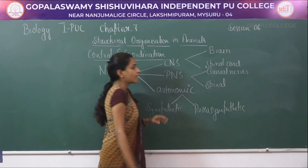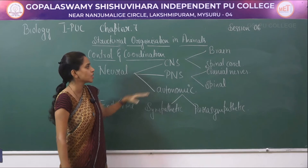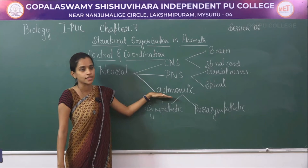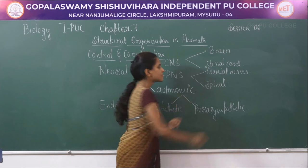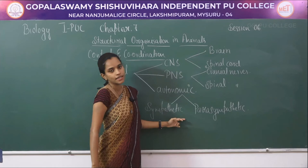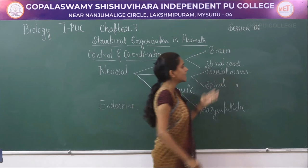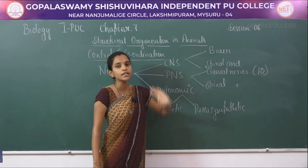Neural coordination includes the central nervous system, peripheral nervous system, and autonomic nervous system. The central nervous system includes brain and spinal cord; the peripheral nervous system includes cranial nerves and spinal nerves; the autonomic nervous system includes the sympathetic and parasympathetic types. There are almost 10 cranial nerves which arise from the brain.